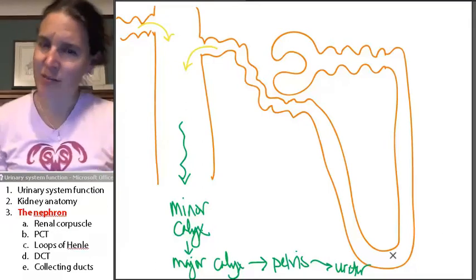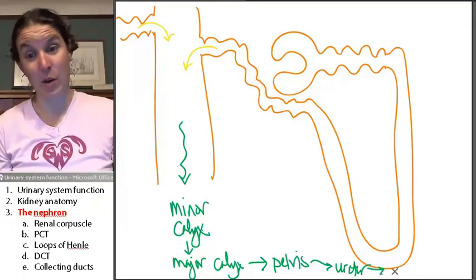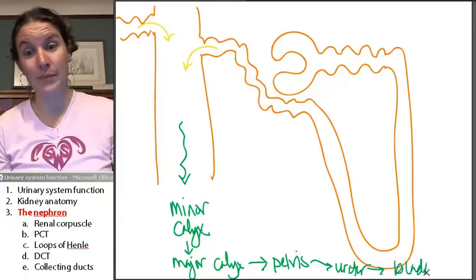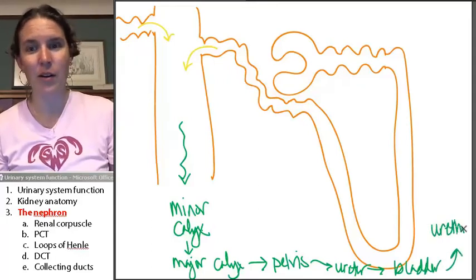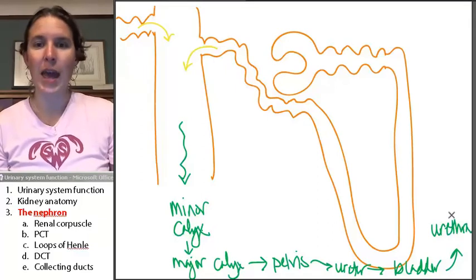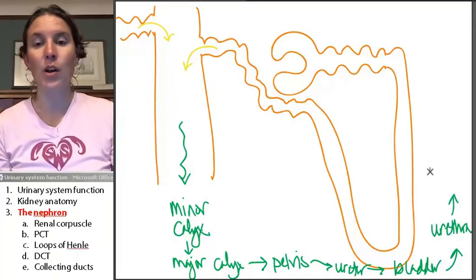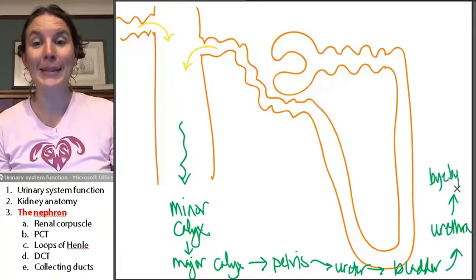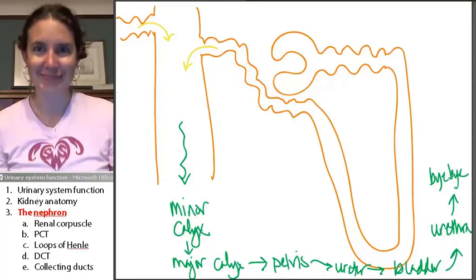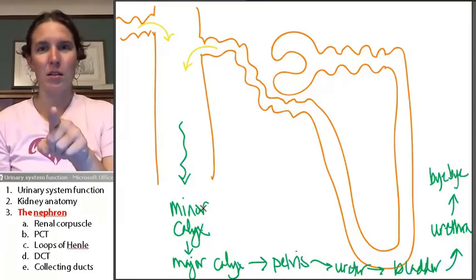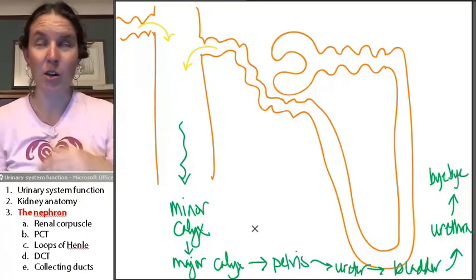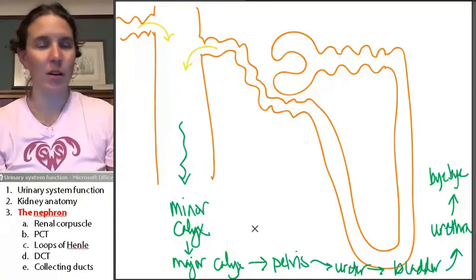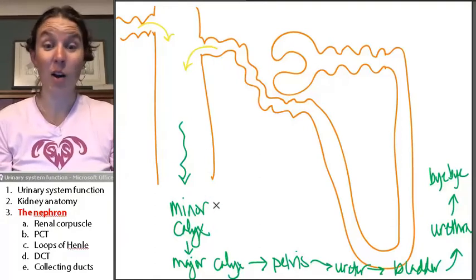And from the ureter, why not? Let's just keep going. We're going into the bladder. And from the bladder, we're going into the urethra. You could have done this, couldn't you? And from the urethra, we're going to go, bye bye, into the potty. Hopefully into the potty. If you're my small children, who knows where you're going to go? Terrible. All right.